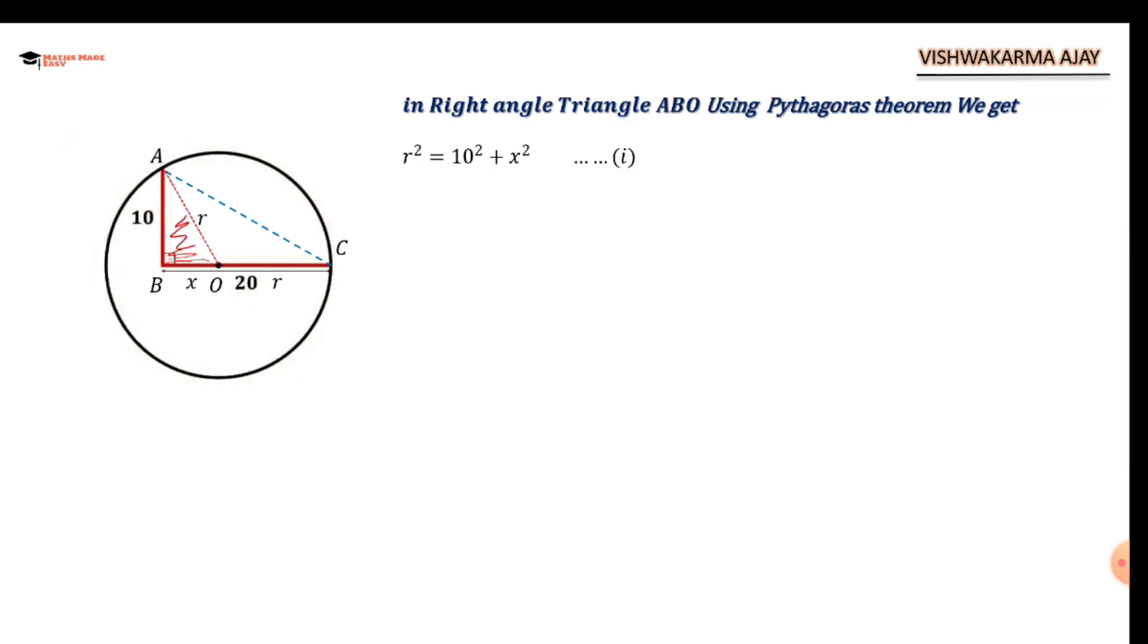As well as X + R = 20, since BC equals 20 given in question. Therefore the value of X is 20 - R. Now what I will do is substitute the value of X, that is 20 - R, in equation number one and solve for radius.